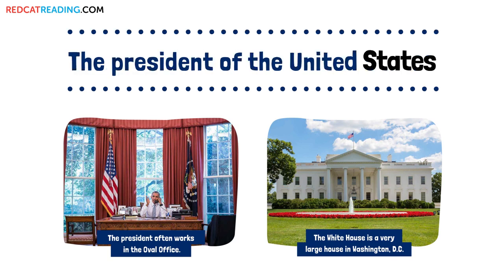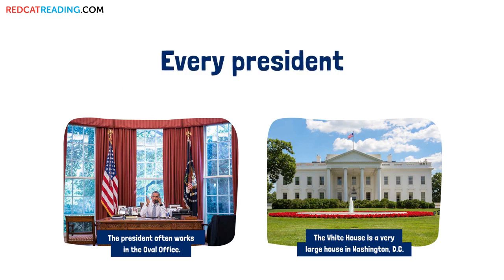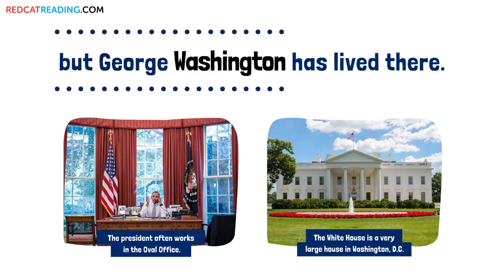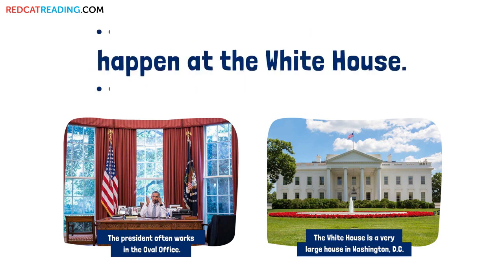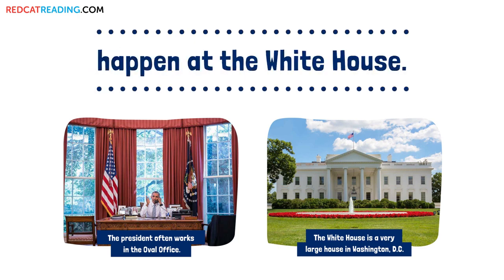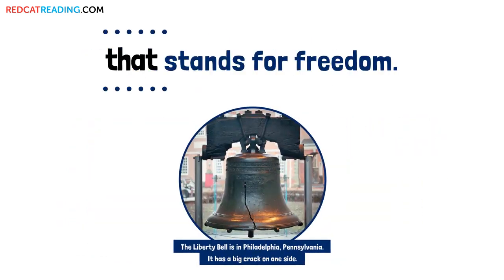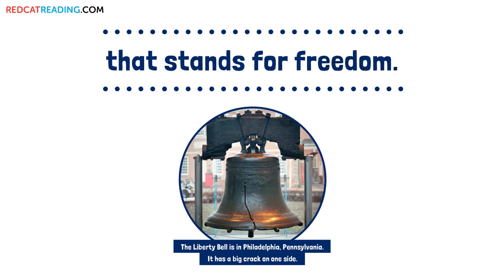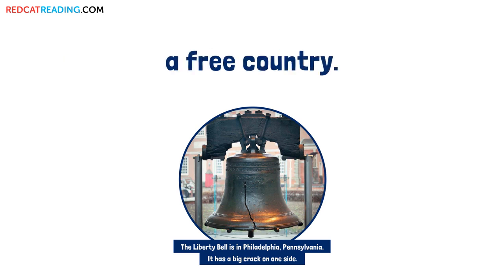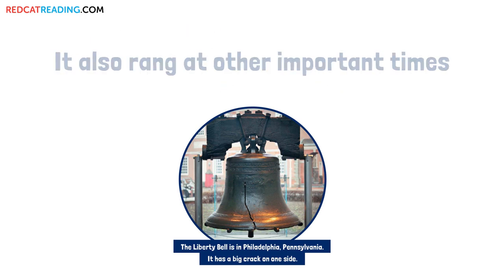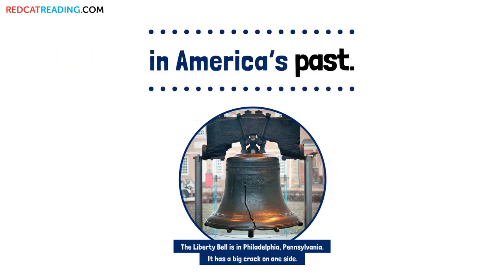The President of the United States lives at the White House. Every president but George Washington has lived there. Many important meetings happen at the White House. The Liberty Bell is a huge bell that stands for freedom. The bell rang when the United States became a free country. It also rang at other important times in America's past.